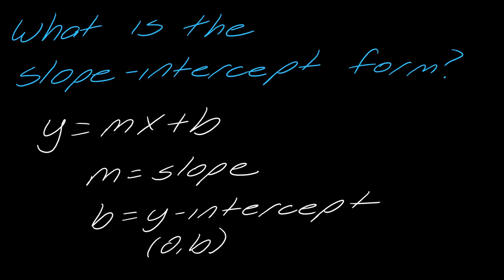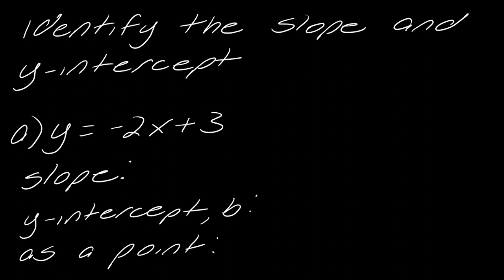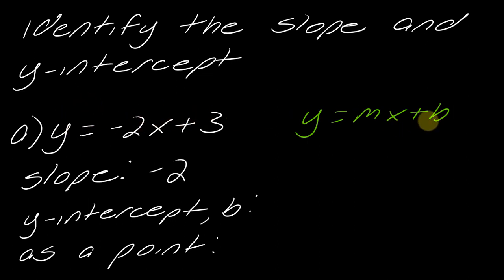The first thing I want to do is get your brain used to picking out the slope and y-intercept just by looking at the equation. Thinking about y equals mx plus b — m is the slope, so whatever is attached to the x. In this case my slope is negative two. The b in this equation is three, which as a point means zero, three.